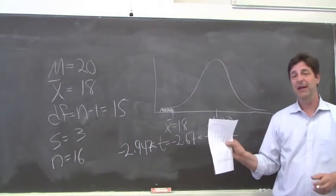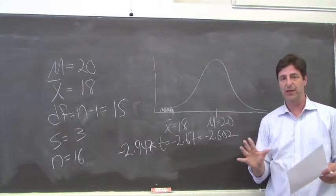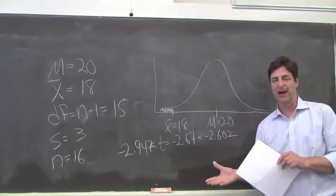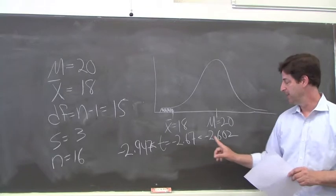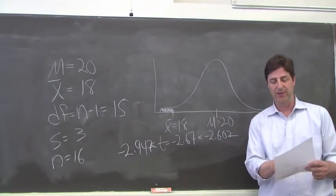Now in Appendix B, there's only positive values, but the t-distribution is symmetrical just like the normal distribution. So you can just flip it around and turn the positive values negative. Our calculated t-value is between these two t-values from Appendix B with 15 degrees of freedom.